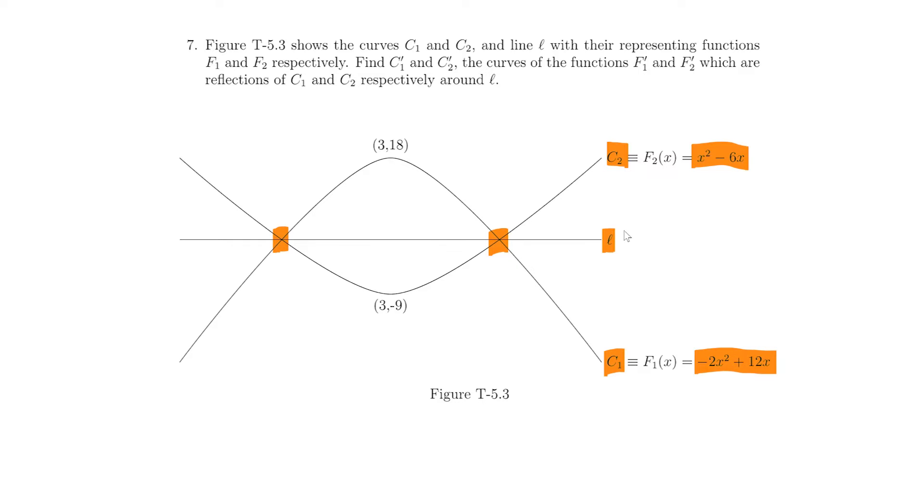So, line L is passing through the intersection points of these two parabolas. They are asking find C1 dash and C2 dash, the curves of the functions F1 dash and F2 dash, which are reflections of C1 and C2 respectively around L.